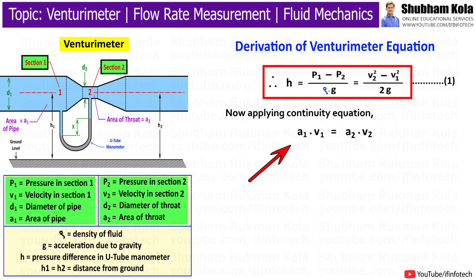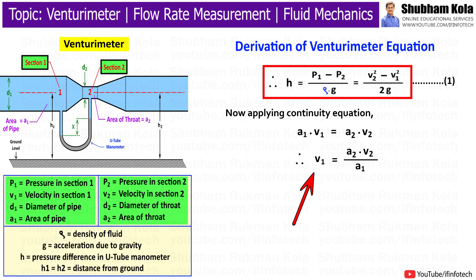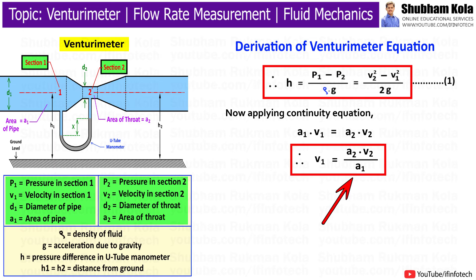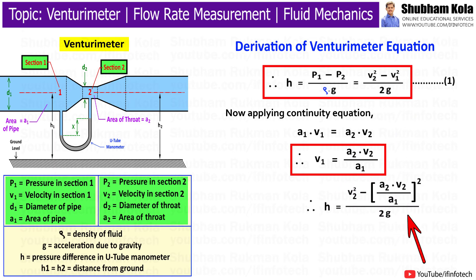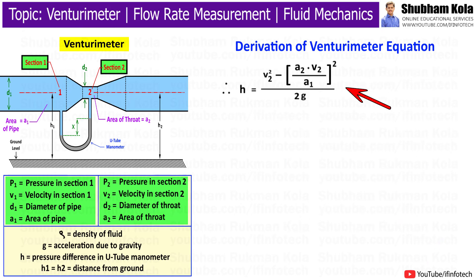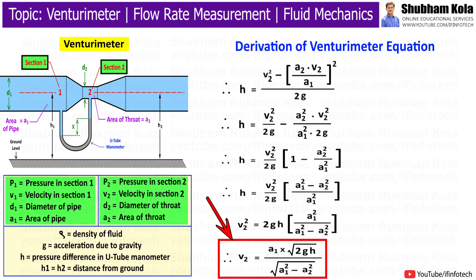Next, we are applying the continuity equation, which is the product of cross-sectional area and velocity. So we will get V1 equal to A2·V2 / A1. Now I will put the value of V1 in the above equation for small h. And after simplifying this equation, we will get V2 equal to A1 multiplied by the square root of (2gh) divided by the square root of (A1² – A2²).